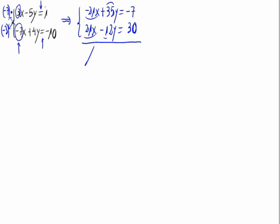Now 35y plus minus 12y which gives us 23y. 23y equals minus 7 plus 30 which equals 23. So now we isolate the y. Y would be 23 and this 23 which is multiplying will go to the other side dividing, 23 by 23 which equals 1.